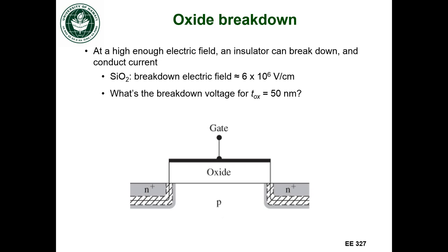So we need to know what the breakdown electric field is for silicon dioxide. And that's about 6 megavolts per centimeter. So as long as we don't exceed that voltage, then we won't break down the silicon.